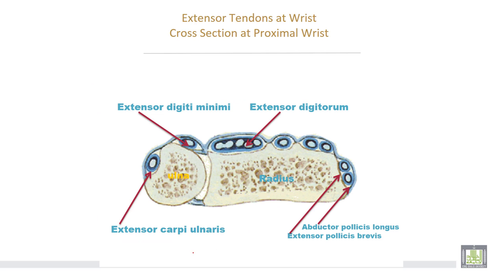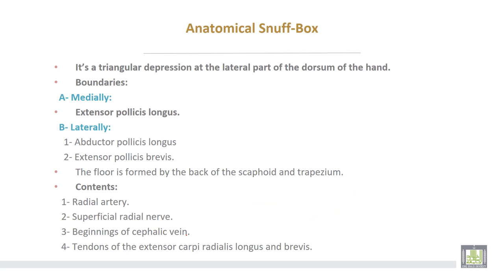These are the different compartments of the extensor retinaculum. First: abductor pollicis longus and extensor pollicis brevis. Second, third, fourth containing four structures. The fifth containing extensor digiti minimi. The sixth compartment containing extensor carpi ulnaris.